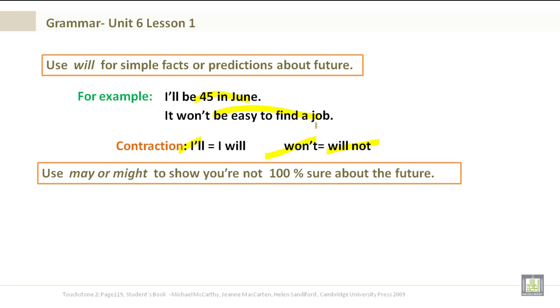Use may or might to show you are not 100% sure about the future. For example, I may travel to America next summer. He might not be able to afford it.